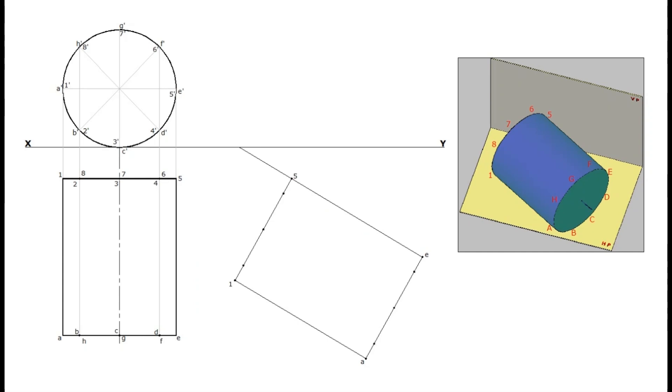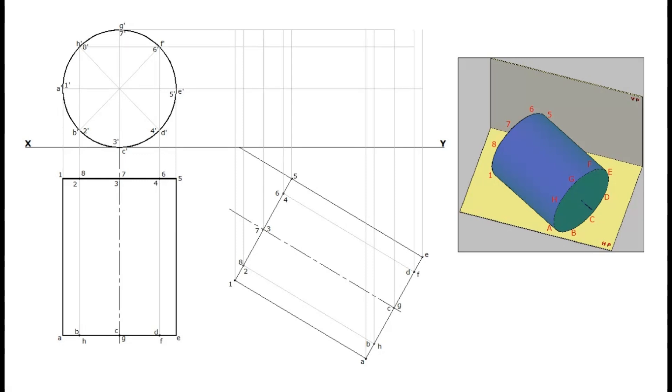Mark the front and rear base points. Now to draw the front view of the second stage or the final front view, project all the points of the second stage top view. Similarly, project all the points from the first stage front view. Trace and locate the corresponding points of intersection.